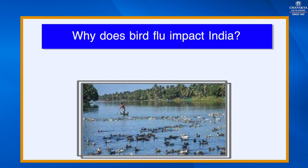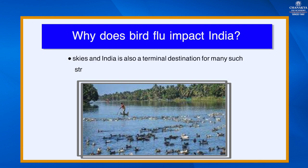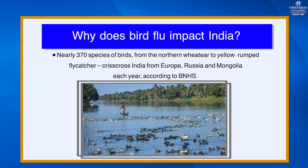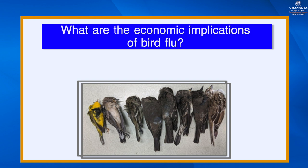According to the Bombay Natural History Society, India is the epicenter as flight paths of migratory birds crisscross the country's skies, making India a biological hotspot for bird disease. Nearly 370 species of birds from the northern wheatear to the yellow-rumped flycatcher crisscross India from Europe, Russia, and Mongolia each year. This time, bird flu came from Siberia, Mongolia, China, and some other Central Asian countries.